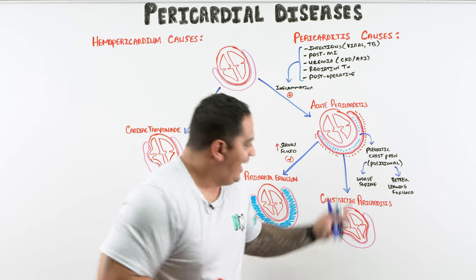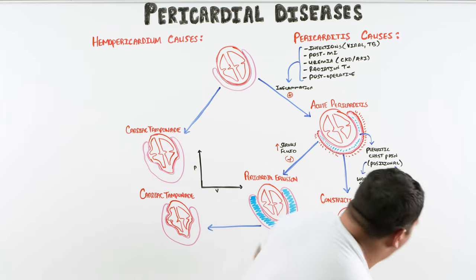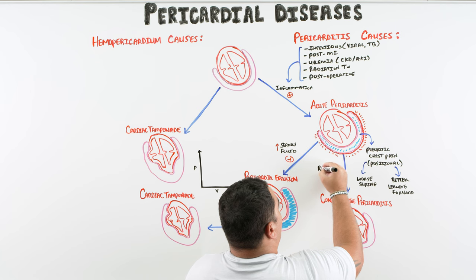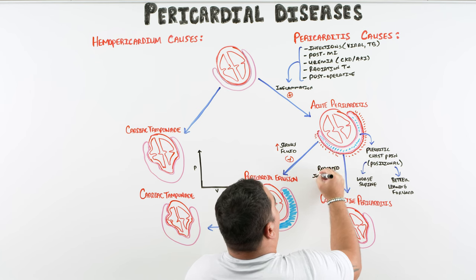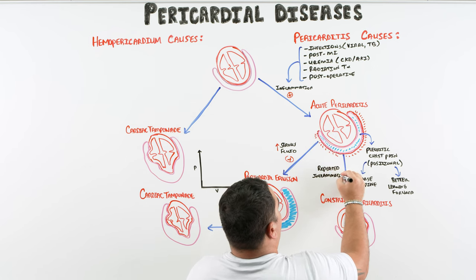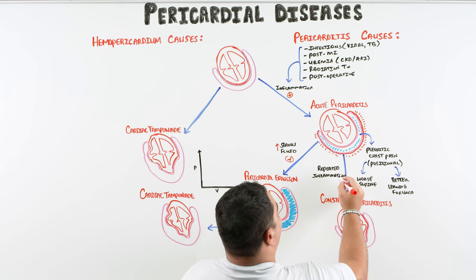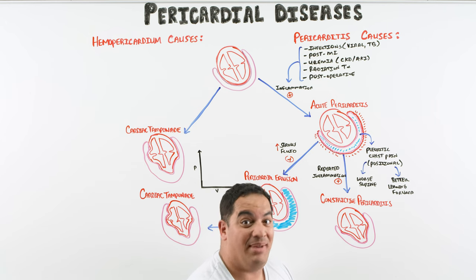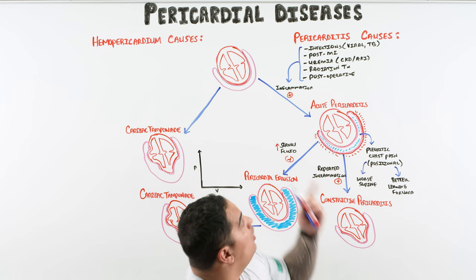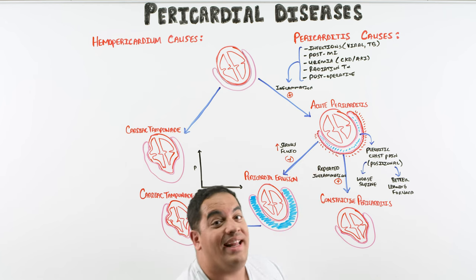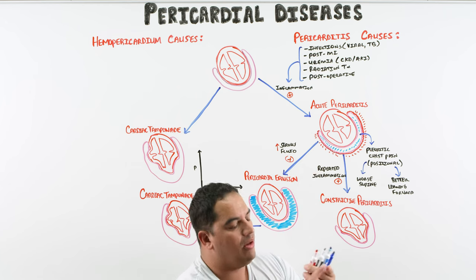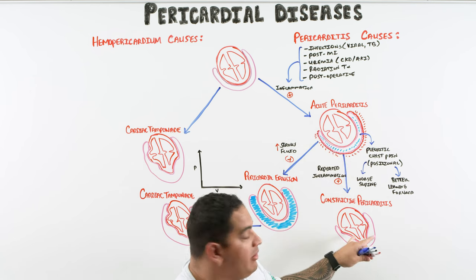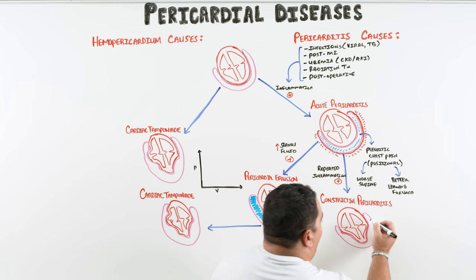Acute pericarditis can potentially progress if there are repeated bouts of inflammation. The causes that most consistently cause repeated inflammation and can lead to constrictive pericarditis are tuberculosis — because it's a chronic disease — and radiation therapy. Those two are the most common causes of repeated inflammation leading to constrictive pericarditis.